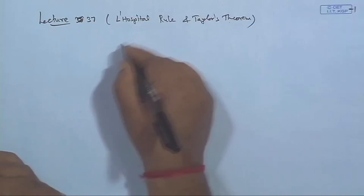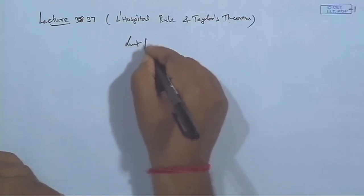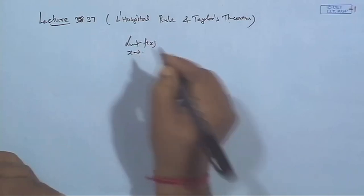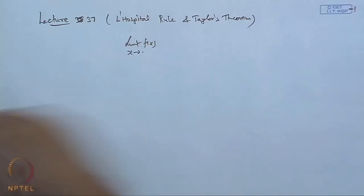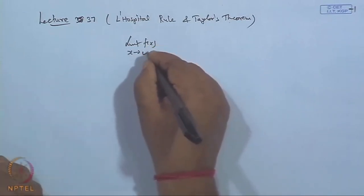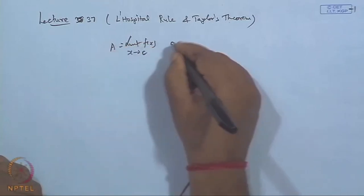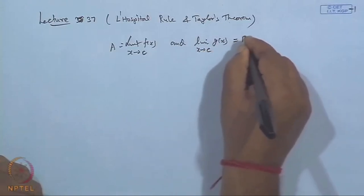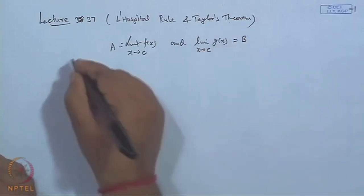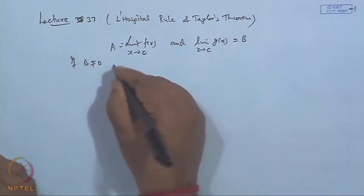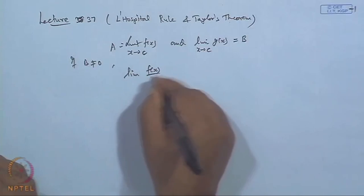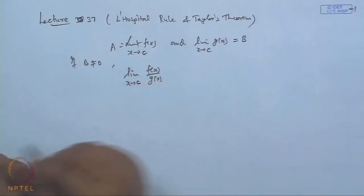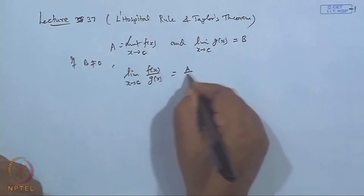Today we will discuss L'Hôpital's rule and Taylor's theorem. We have seen already that if the limit of f(x) as x tends to c is a, and the limit of g(x) as x tends to c is b, then if b is not equal to 0, one can find the limit of f(x)/g(x) when x tends to c, and it is equal to a/b.